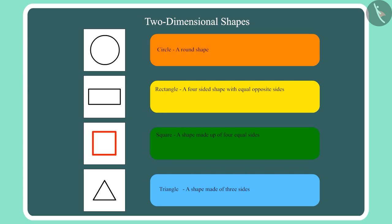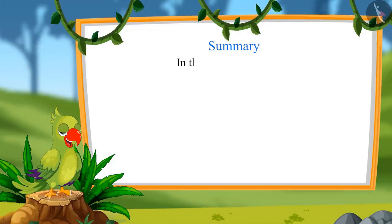And this shape, which is called square, is made up of four equal sides. And this is a triangle because this shape is made up of three sides. So children, that was all for today.